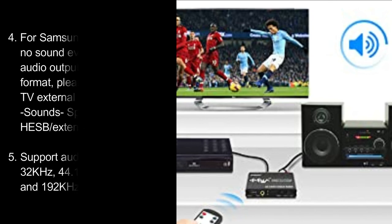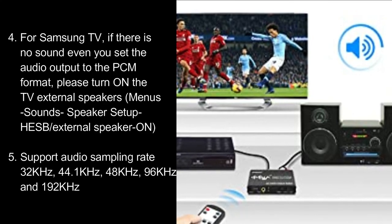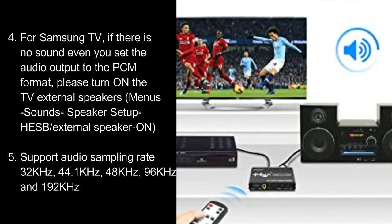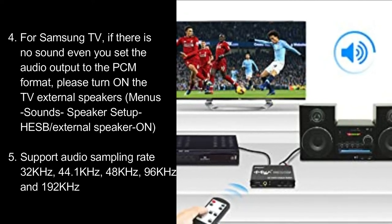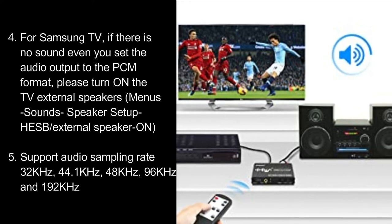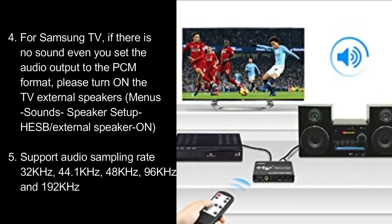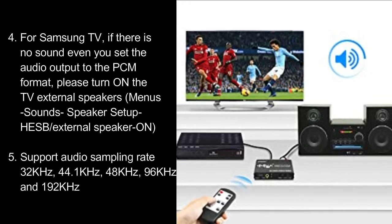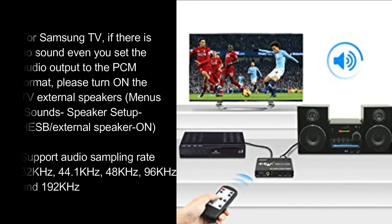4. For Samsung TV, if there is no sound even after setting the audio output to PCM format, please turn on the TV external speakers: Menu > Sound > Speaker Setup > HESB/External Speaker On. 5. Supported audio sampling rates: 32 kHz, 44.1 kHz, 48 kHz, 96 kHz, and 192 kHz.